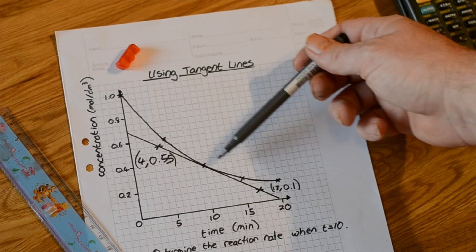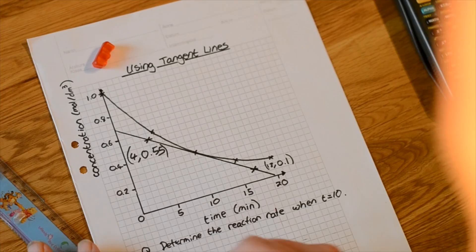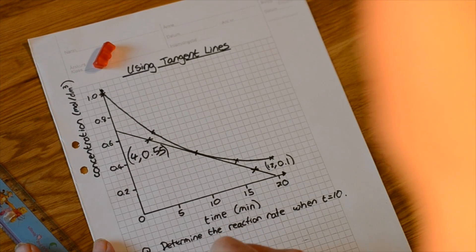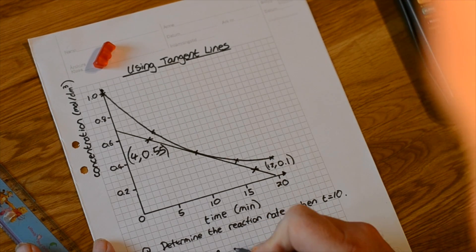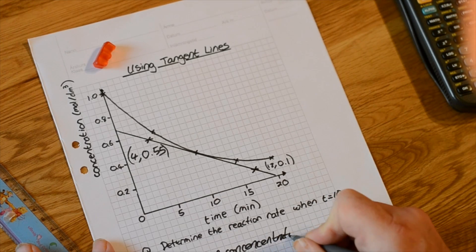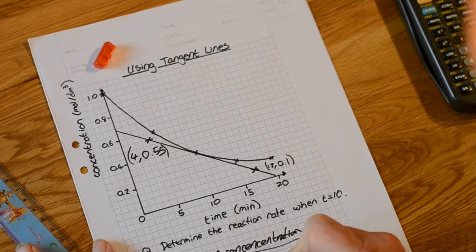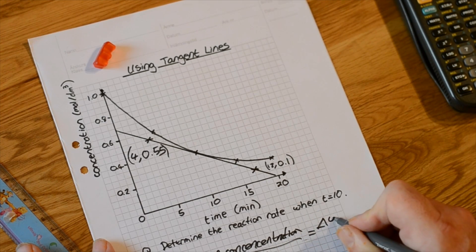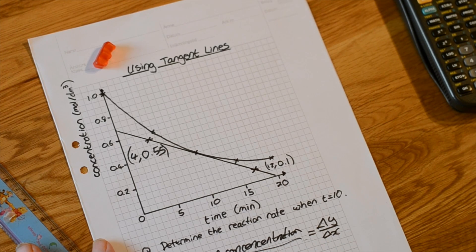The reaction rate is equal to the change in concentration over the change in time. That's going to be the change in y over the change in x. We can use a difference quotient for this.